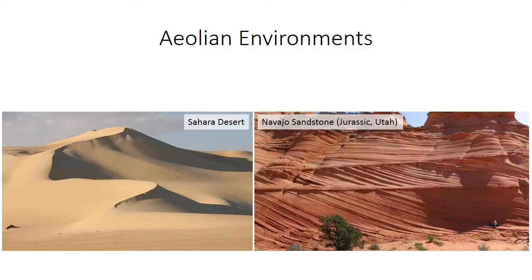This video covers sediment transport processes and the resulting facies in aeolian environments. The word aeolian describes transport and deposition by wind, so aeolian environments are primarily sand dunes, especially in deserts, but also sometimes near beaches or any place where there's abundant wind and abundant available sand. Aeolian deposits are pretty easily recognized in general — these giant crossbeds, like you see on the right, are pretty unmistakable. But there's a lot of nuance, especially regarding dune type or other specific processes that we're not going to cover in this video.